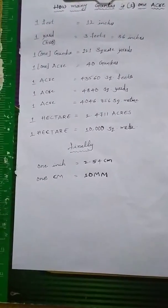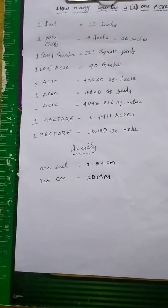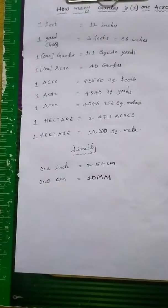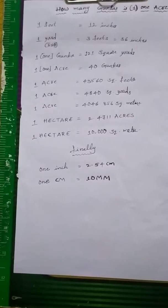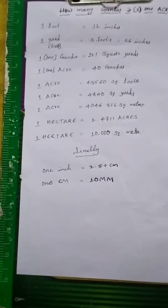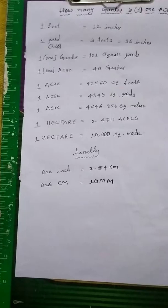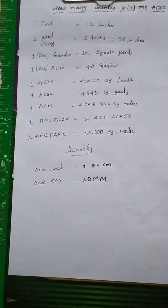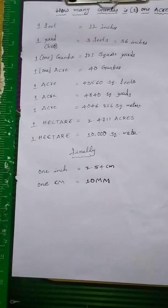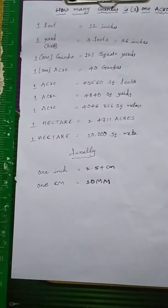1 acre is equal to 43,560 square feet. 1 acre is equal to 4,840 square yards. 1 acre is equal to 4,046.856 square meters.